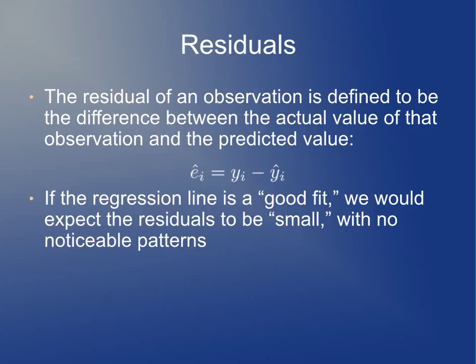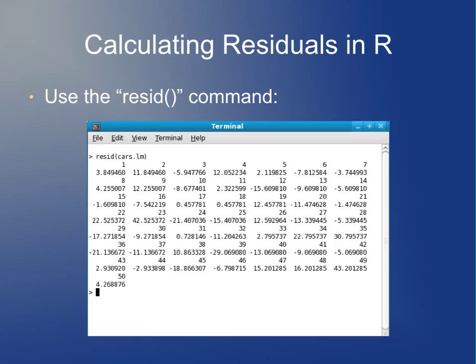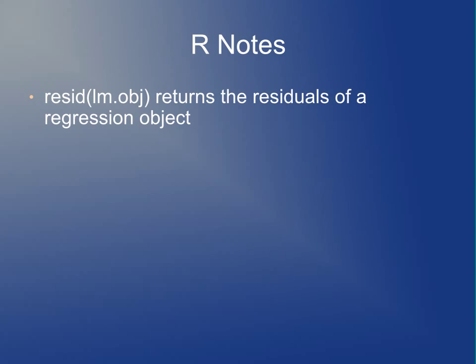A little terminology: the error in a regression line for a given observation is called the residual — the difference between the actual value and the predicted value. If the regression line is a good fit, we would expect the residuals to be small with no noticeable patterns. In R, the command is resid(cars.lm), which gives the difference between the true value and the predicted value for each observation. There are some fairly large residuals here, but most are relatively small, indicating the model is a fairly decent fit.